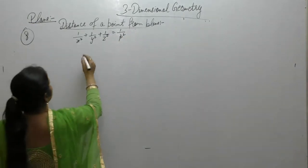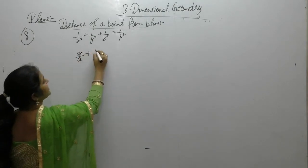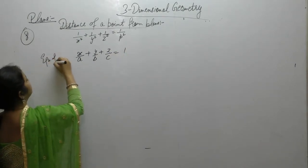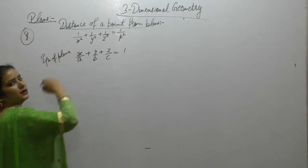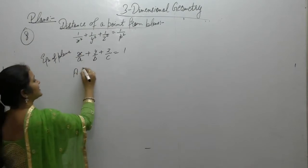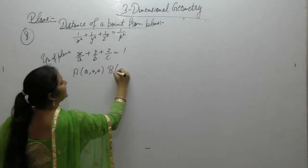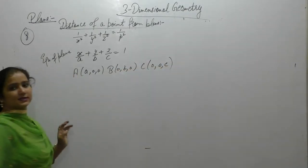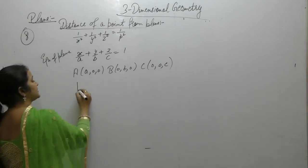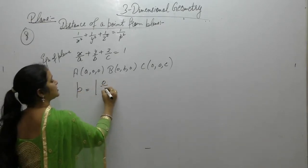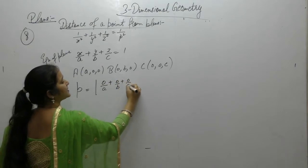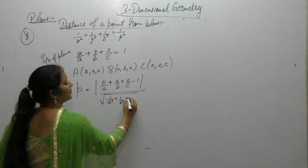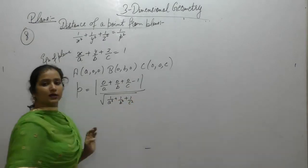Again, the equation of a plane having intercepts A, B, C — this is the equation of the plane. It cuts the coordinate axes at A(A, 0, 0), B(0, B, 0), and C(0, 0, C). Now, since the distance from the origin is p, we write: 0 upon A plus 0 upon B plus 0 upon C minus 1, upon square root of 1 upon a square plus 1 upon b square plus 1 upon c square.